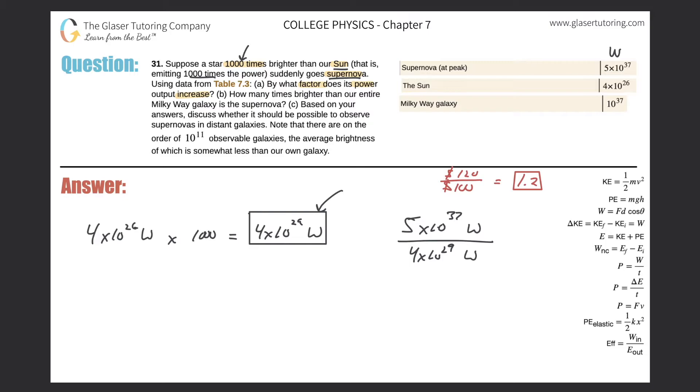That sun that's 1,000 times brighter than our sun had started out with a value of 4 times 10 to the 29. Then if it goes supernova, it then became 5 times 10 to the 37. So if I do the division here, I essentially find the factor by which it increases, just like I did up here.